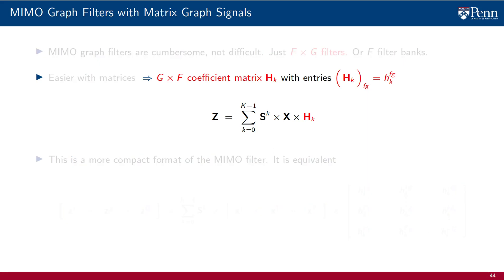What matters is the expression for a MIMO graph filter, in which an input matrix signal X with F features is processed to produce an output matrix signal Z with G features. The form of the filter is reminiscent of a polynomial on the shift operator S, in that it contains powers of this matrix. The coefficients of a MIMO filter are not a set of scalar, lower case HK, but a set of G times F matrices, upper case HK, that multiply from the right. This structure is equivalent to a set of F filter banks with G filters each.